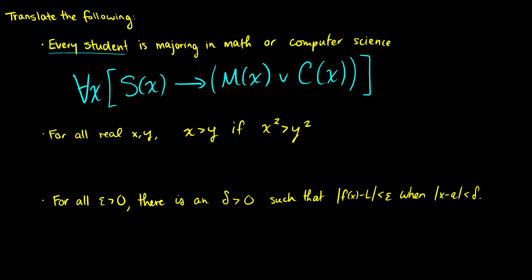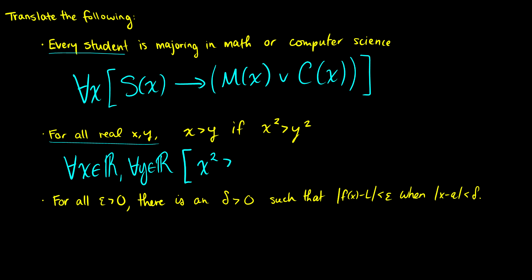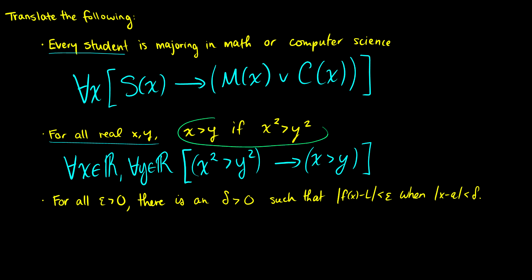Second question: for all real x and y, x is greater than y if x squared is greater than y squared. So this is: for all x in the real numbers, for all y in the real numbers, if x squared is greater than y squared then x is greater than y. Note that I changed the order of the 'if' there just to mix things up a little.